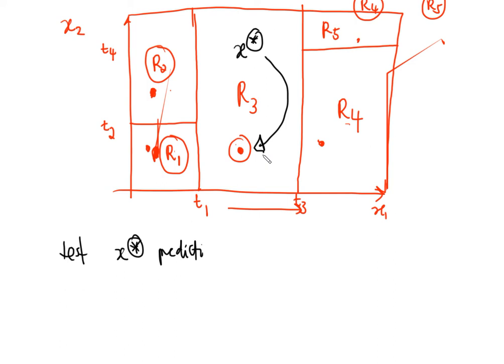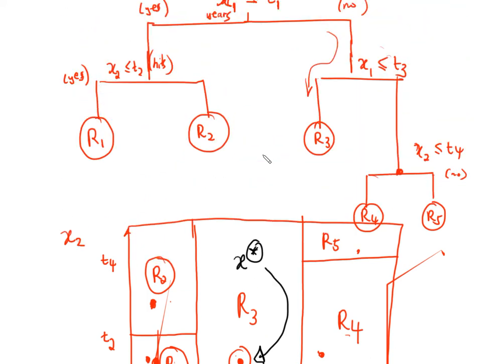Someone might ask: does this overfit the data? If we keep splitting, we might end up with one observation per region, which means n regions for n observations — that is overfitting. In the next video we're going to see how we can prune our tree so that it does not overfit.